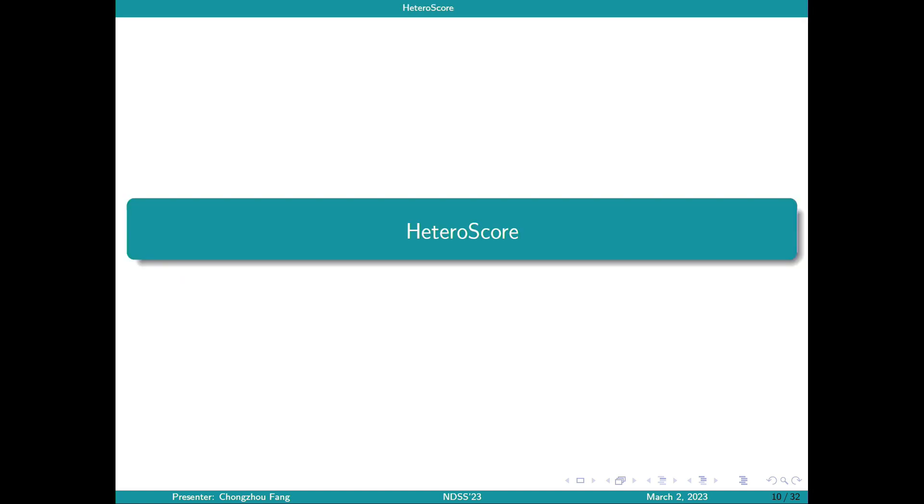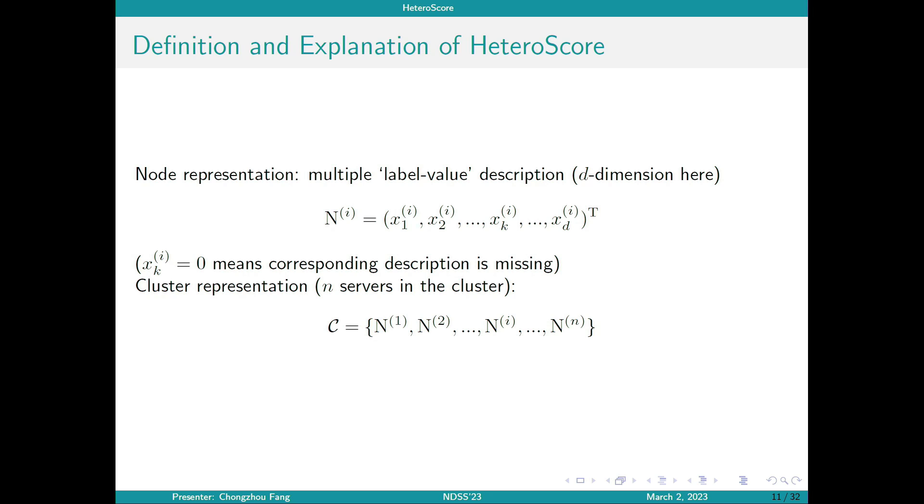So now let's talk about how heteroscore is constructed. The key idea here is that we try to map a cluster consisting of multiple servers to a geometric space to provide abstraction. Then we construct a metric to depict the sparsity of that space.